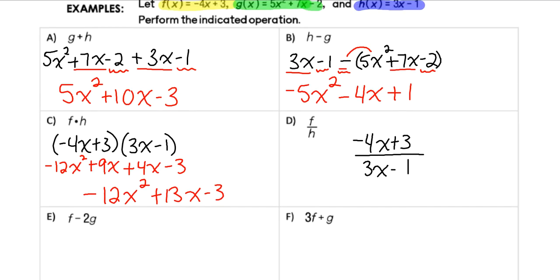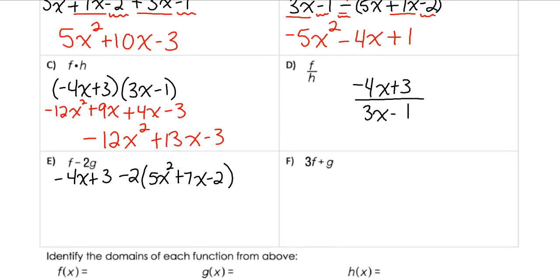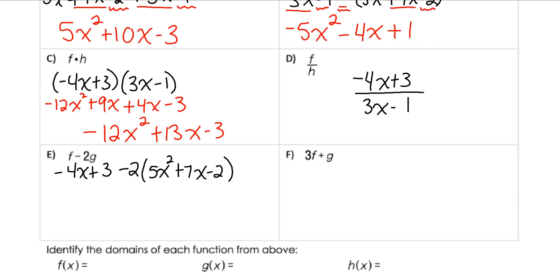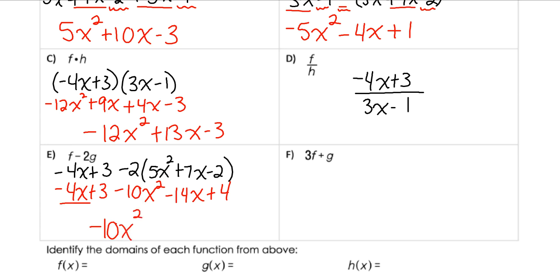For example e, we have f(x) minus 2 times g(x): (−4x + 3) − 2(5x² + 7x − 2). I'll start by distributing the negative 2, keeping the first function the same. That gives −10x² − 14x + 4. Combining like terms: −10x², then −4x − 14x = −18x, and 3 + 4 = 7. So the result is −10x² − 18x + 7.